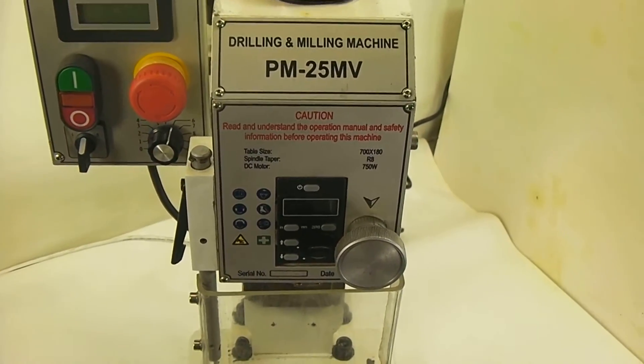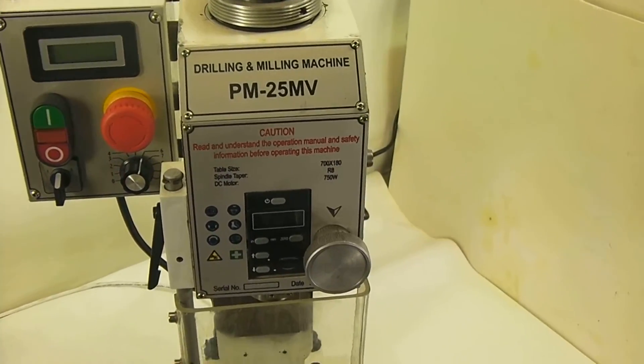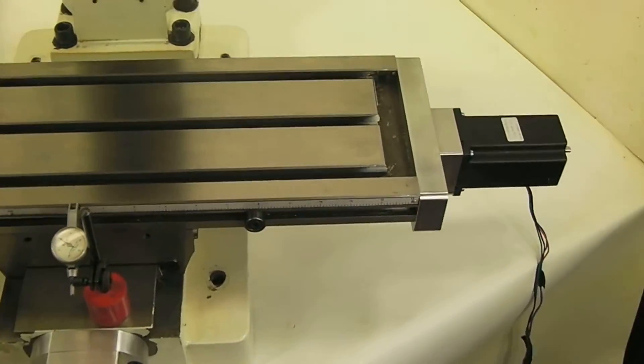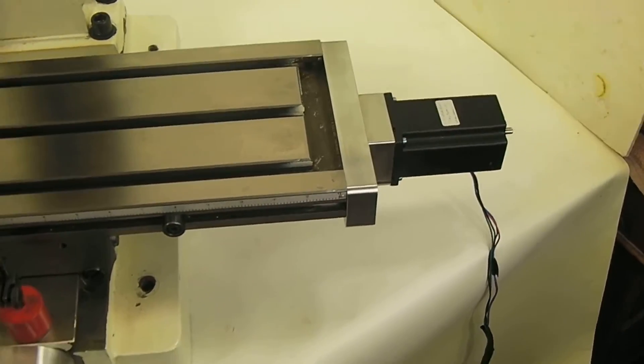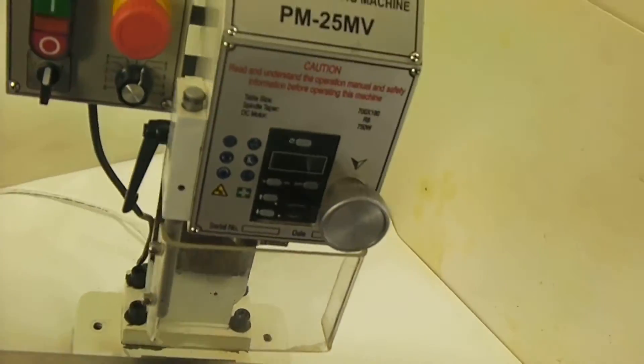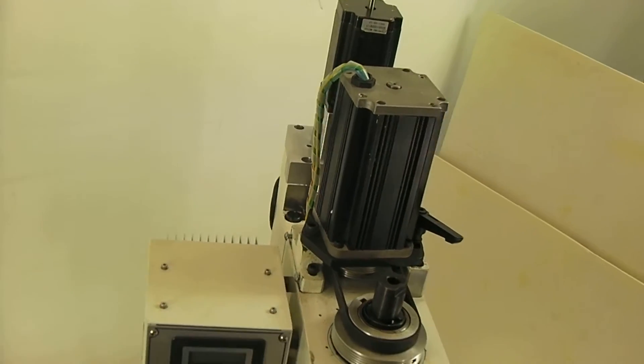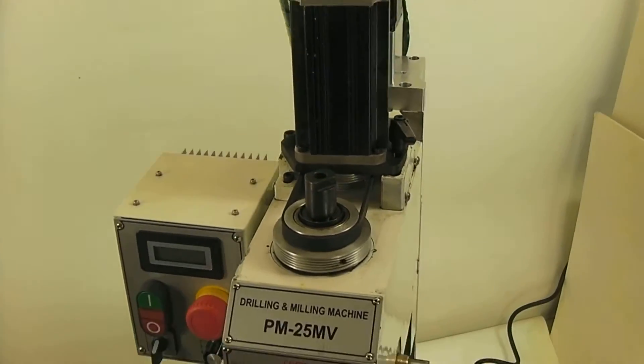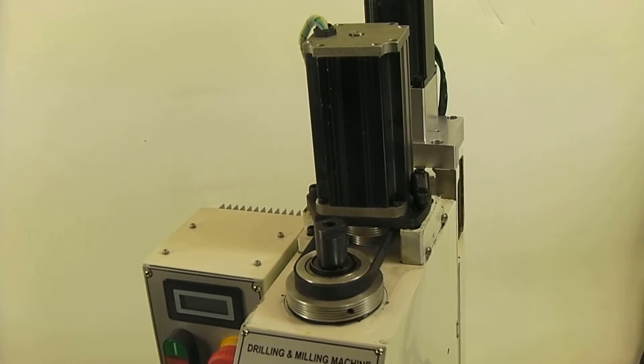So we finally have the motors installed on the new version of the Precision Matthews PM25. We have the 570 ounce NEMA 23 steppers on the X, the Y, and the Z. Everything's been calibrated. I got the motor hood off, I've been breaking in the spindle on this one.